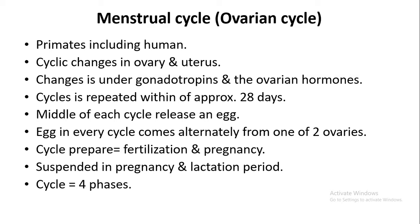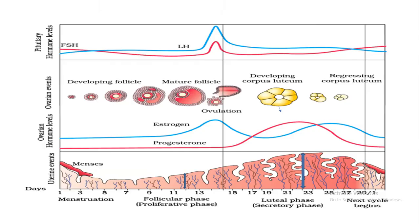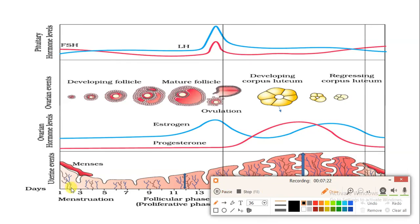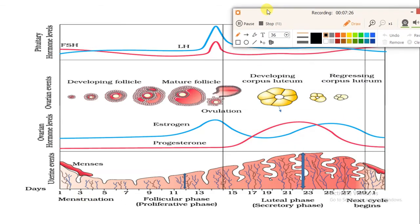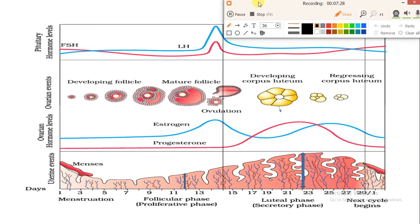The menstrual cycle is divided into four phases. The first phase is called menstruation, or the menstrual phase. This is the beginning of the cycle. Here there is blood loss of approximately 45 to 100 ml of blood. This time period is for approximately 1 to 5 days. During that time period, there is also a sensation of pain.